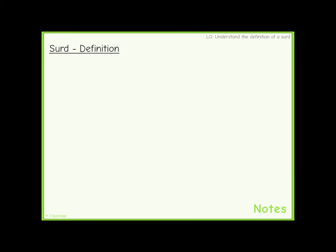In this video we will understand the definition of a surd. When a square root gives an irrational number, it's called a surd.